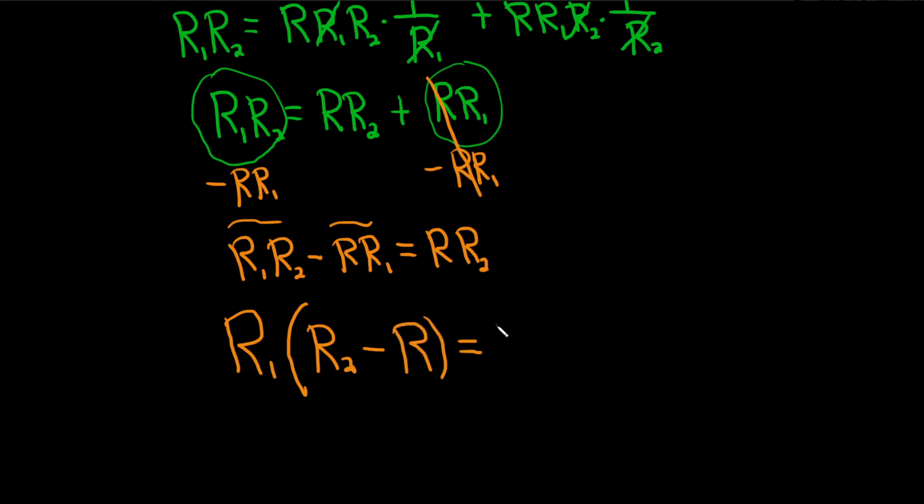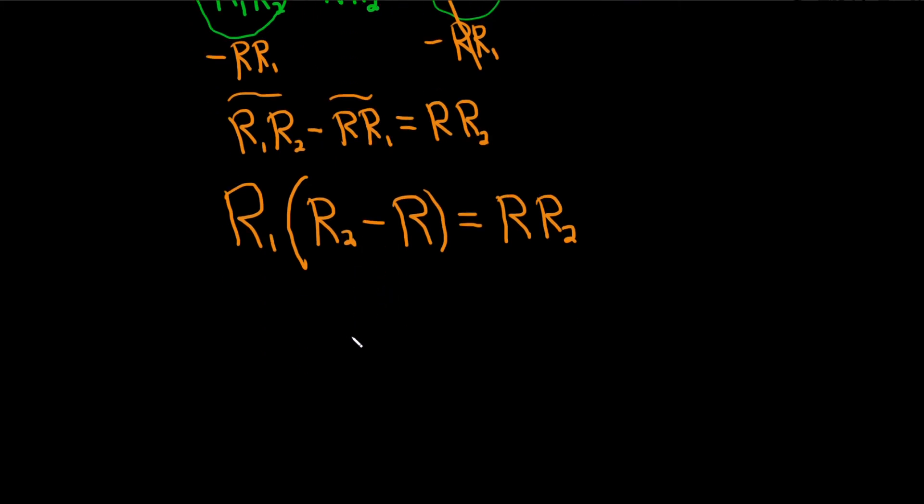And here we have R, R2. And you should mentally check. R1 times R2 is R1 times R2. R1 times R is R1 times R. Everything looks okay. Almost done. One more step.